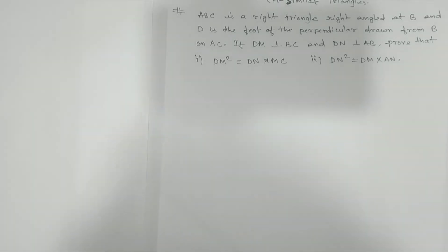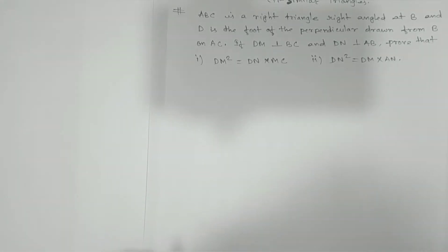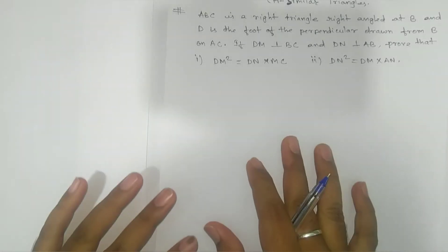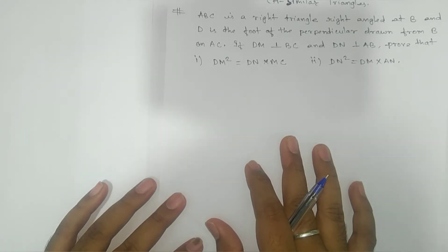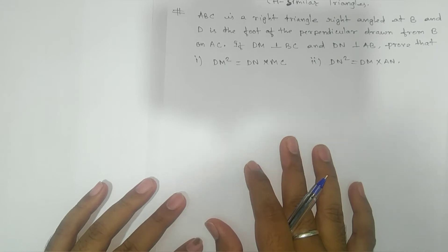Namaste students. Here we have one problem related to similar triangles. ABC is a right angle triangle at B, and D is the foot of the perpendicular drawn from B on AC. If DM is perpendicular to BC and DN is perpendicular to AB, prove that DM² = DN × MC and DN² = DM × AN.